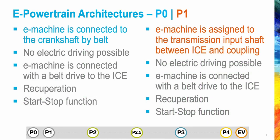If the electric machine is connected with the internal combustion engine through a belt on the front-end accessory drive, it is named P0. If instead the electric motor is connected directly with the crankshaft of the internal combustion engine, the configuration is named P1. In both cases, pure electric driving is not possible.